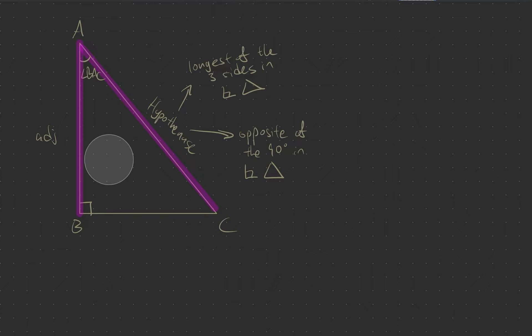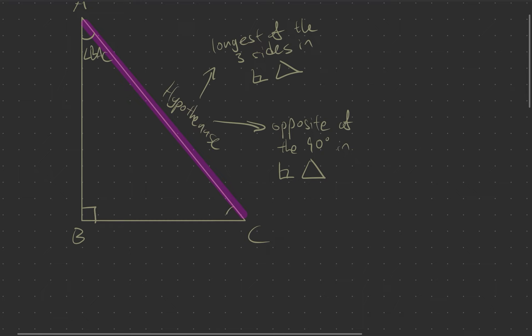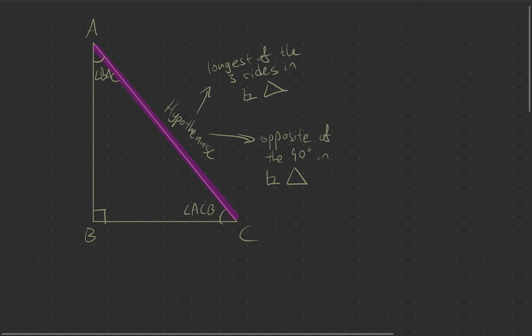But what if we are viewing from this angle here? So this angle is angle ACB. So now, the side that is beside this angle is side BC, so then we'll call this the adjacent. And AB will be directly opposite angle ACB, so now we will call this side the opposite.